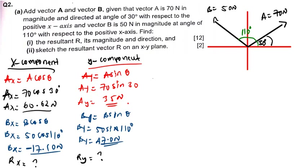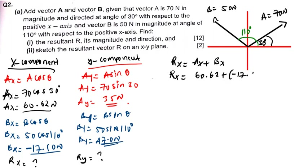Now I need to find Ry and Rx. Rx is the resultant of Ax plus Bx. So Rx equals 60.62 plus negative 17.10, which gives Rx equals 60.62 minus 17.10, and I'm getting 43.52 newtons.